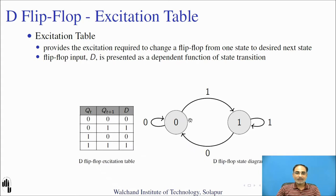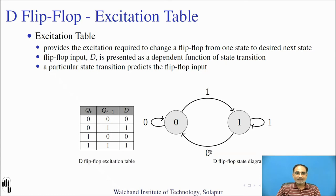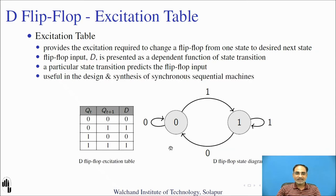The state diagram also gives excitation information: for 0→0, D=0; for 0→1, D=1; for 1→1, D=1; for 1→0, D=0. A particular state transition predicts the flip-flop input needed. Using state diagrams, you can predict the flip-flop input required for a particular state transition. Excitation tables are normally used in the design and synthesis of synchronous sequential machines, such as counters and finite state machines.